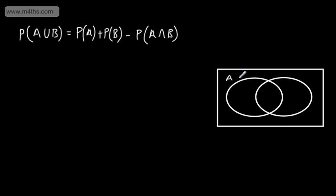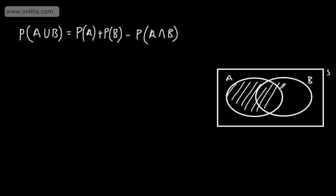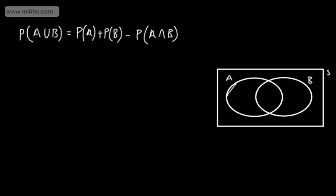If I draw up a Venn diagram, we've got two events A and B, and we've got the sample space. If I wanted to represent A union B, that is both ellipses — this gives us A union B. It's saying it's either A or B or both. If I wanted to represent the intersection A intersection B, that is both A and B — that is that part right here.